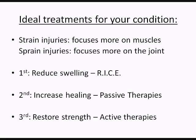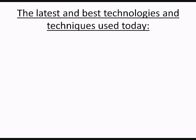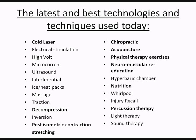An important part of active therapy is increasing proprioception. Proprioception involves the signals your body uses to sense the position and what's going on in the joint, sending those signals up to the brain so the brain can control that joint properly. Here's a list of some of the latest and best technologies used today in healing sprains and strains.